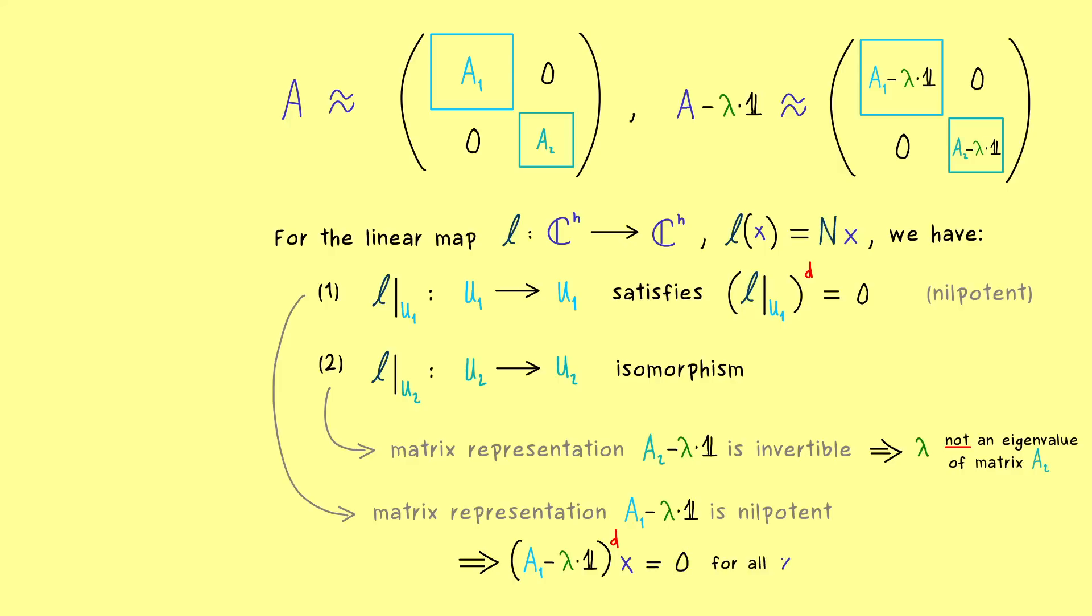So applying any vector x to this matrix always gives us the zero vector. So you see, there are not many possibilities for eigenvectors for the matrix A1 minus lambda identity. The only eigenvectors can correspond to the eigenvalue 0. Which immediately implies that the matrix A1 can only have the eigenvalue lambda.